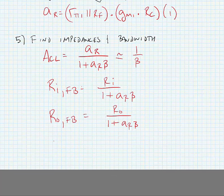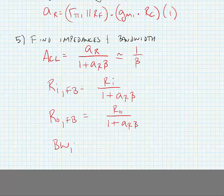And of course, if we were talking about our 3 dB bandwidth, the bandwidth after feedback is equal to the bandwidth before feedback times 1 plus AR times beta.